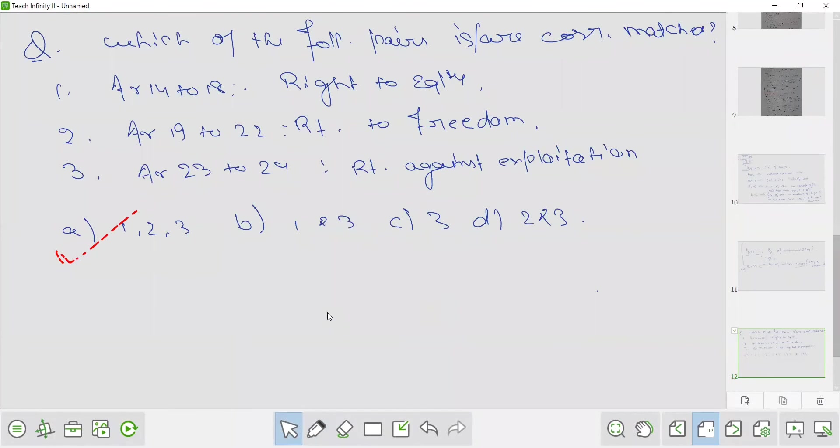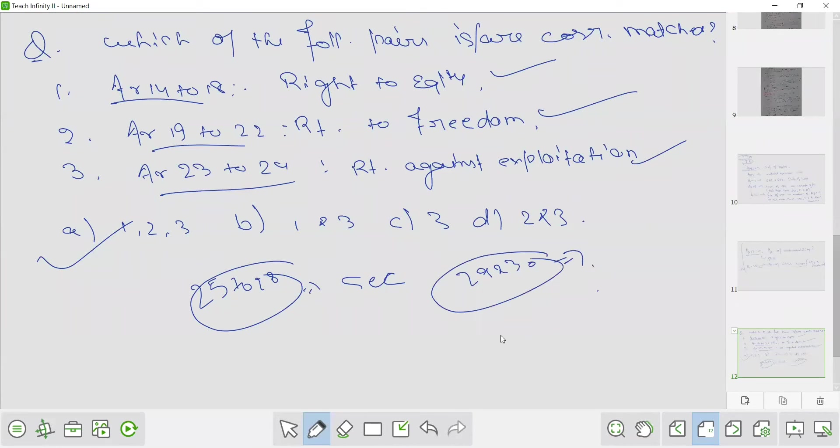All are correct. Article 14 to 18, right to equality. Article 19 to 22, right to freedom. 25 to 28, secular rights. 29 and 30, cultural and educational rights. Right to remedy.